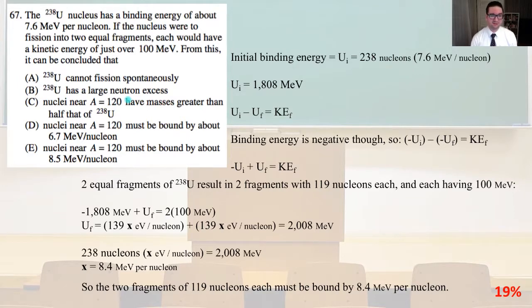Uᵢ minus Uf equals the final kinetic energy. Binding energy is negative, though, so -Uᵢ minus -Uf is going to equal the final kinetic energy. So -Uᵢ + Uf equals kinetic energy final. And we have two equal fragments of the uranium-238, and that's going to result in two fragments with 119 nucleons each, each having 100 MeV. So -1808 MeV plus Uf equals 2 times (100 MeV).